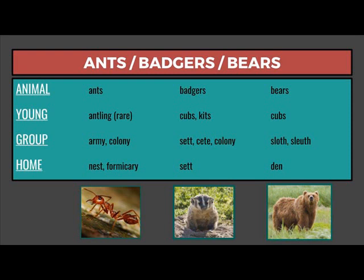Now we're dealing with animal groups and animal homes. An ant: the young of an ant is an antling, which is rare. A group of ants would be called an army or colony. The home of ants would be called a nest or a formicary.